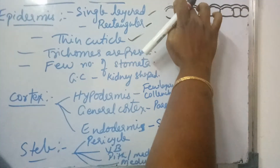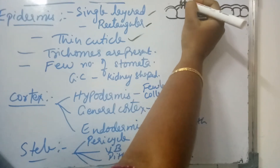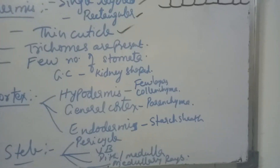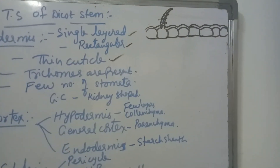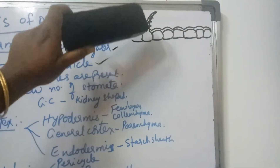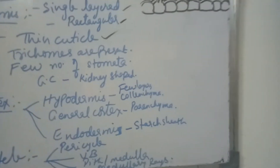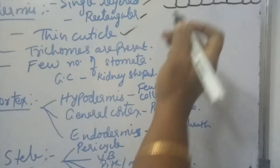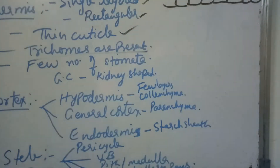In the epidermis, multicellular, multilayered, hair-like structures are present. These are known as trichomes. In dicot stem, these multilayered multicellular hair-like structures called trichomes are present. Few number of stomata are also present in the epidermis of dicot stem.